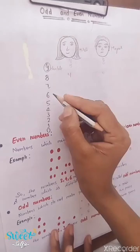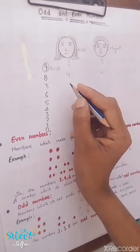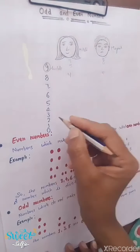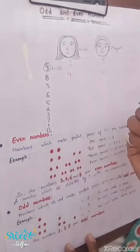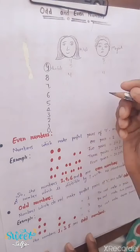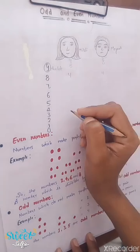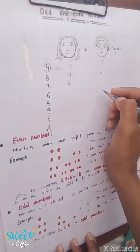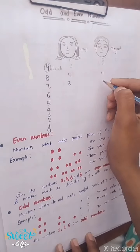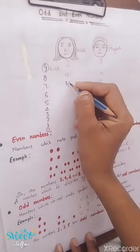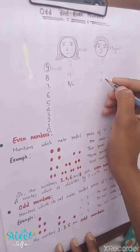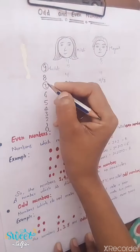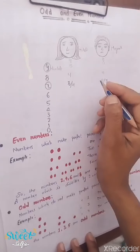Let us look at another number. If I have eight chocolates, I will give four to Mitali and four to Mayank — that works equally. If I have seven chocolates, again we cannot distribute equally between Mayank and Mitali.